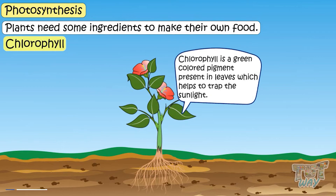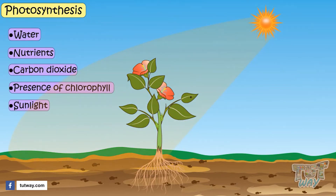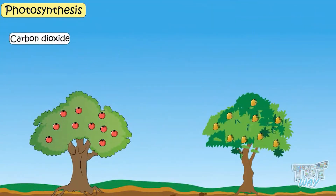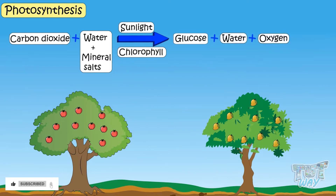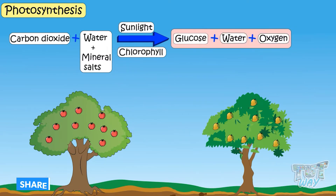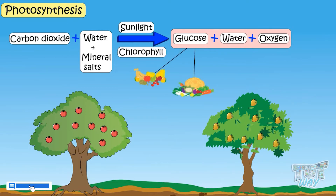So kids, these are the ingredients required by green plants to make their food, and the process is called photosynthesis. The process is: carbon dioxide plus water and minerals, in the presence of sunlight and chlorophyll, forms glucose, water, and oxygen. This prepared food is stored in various forms — as fruits, as vegetables, and as different edible parts of plants.